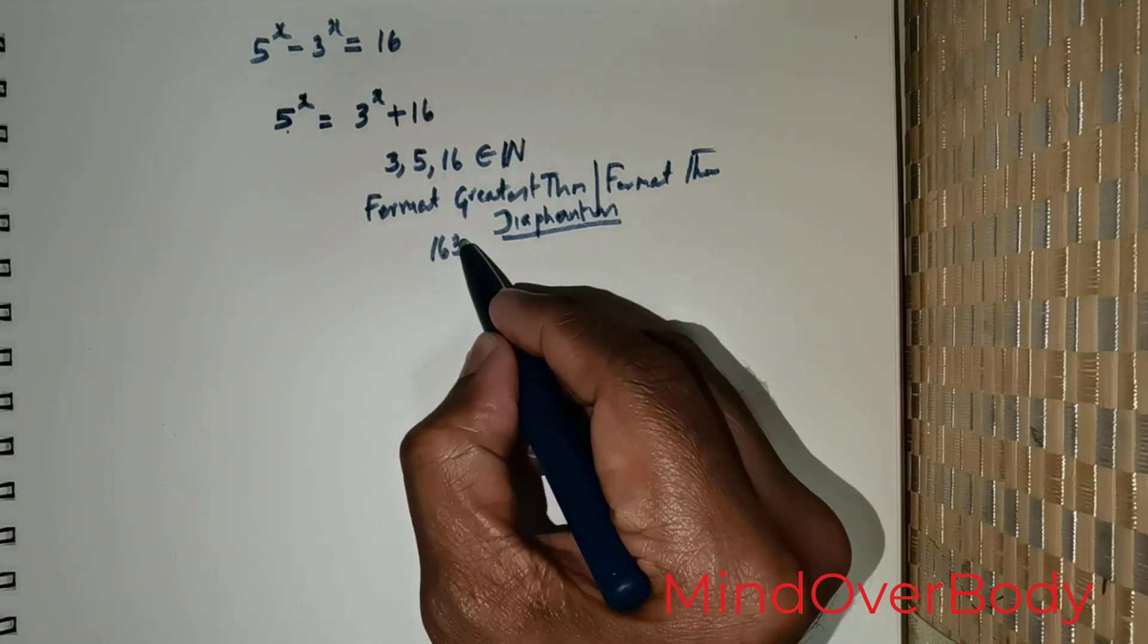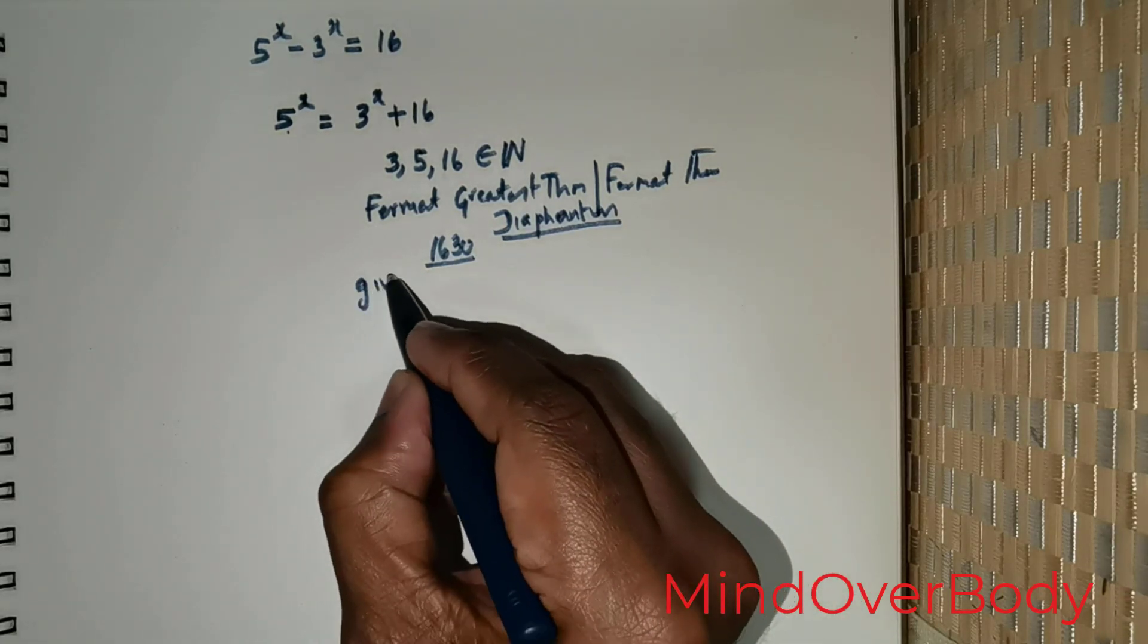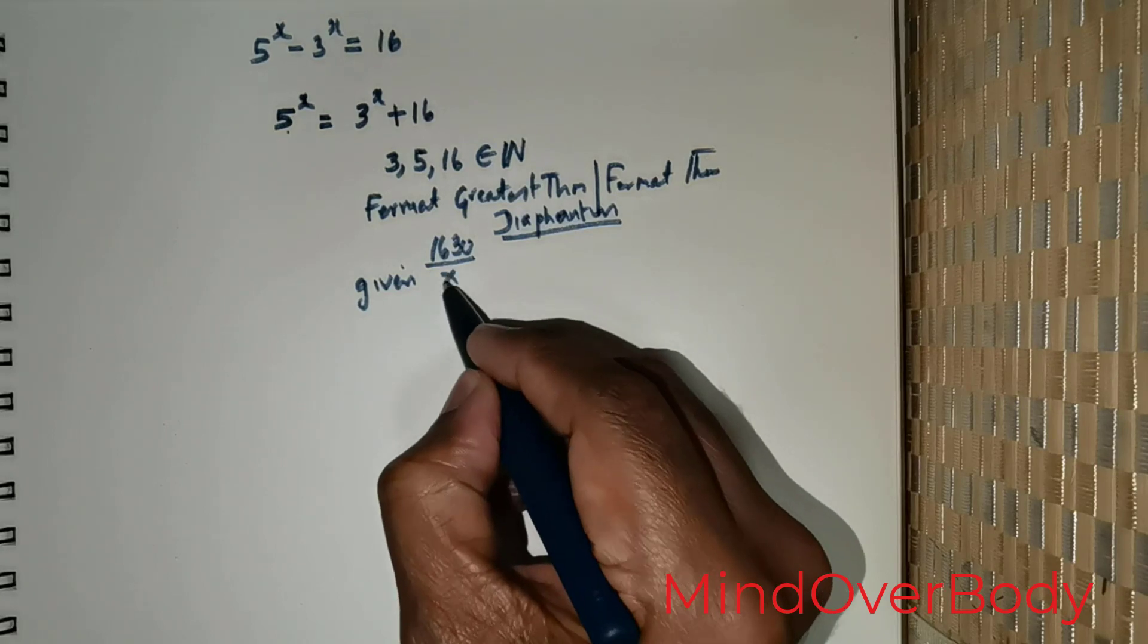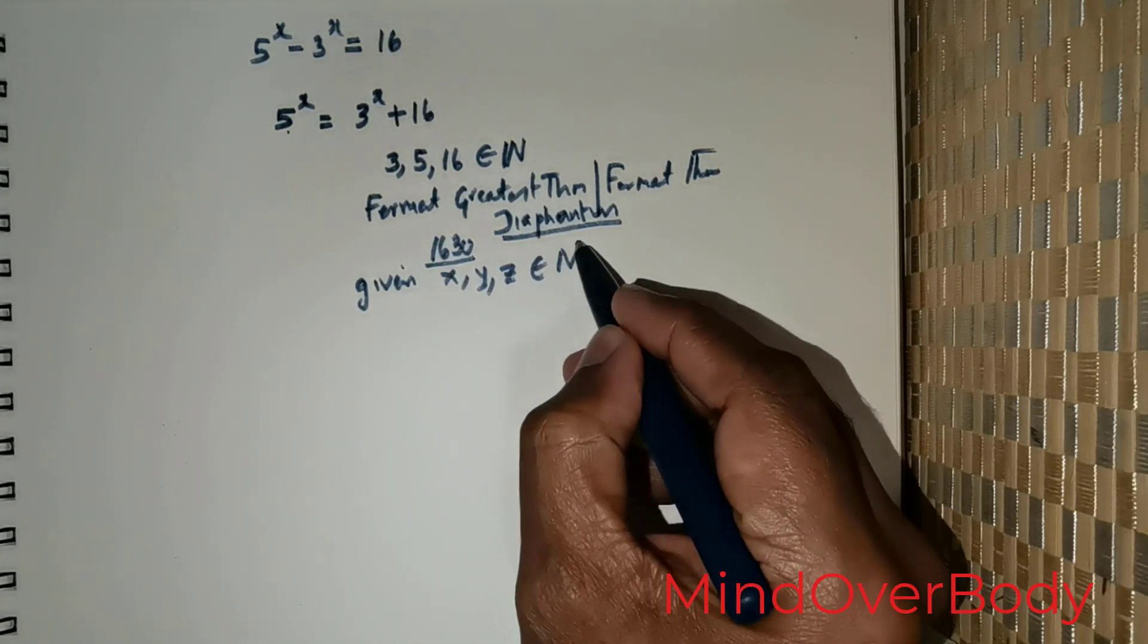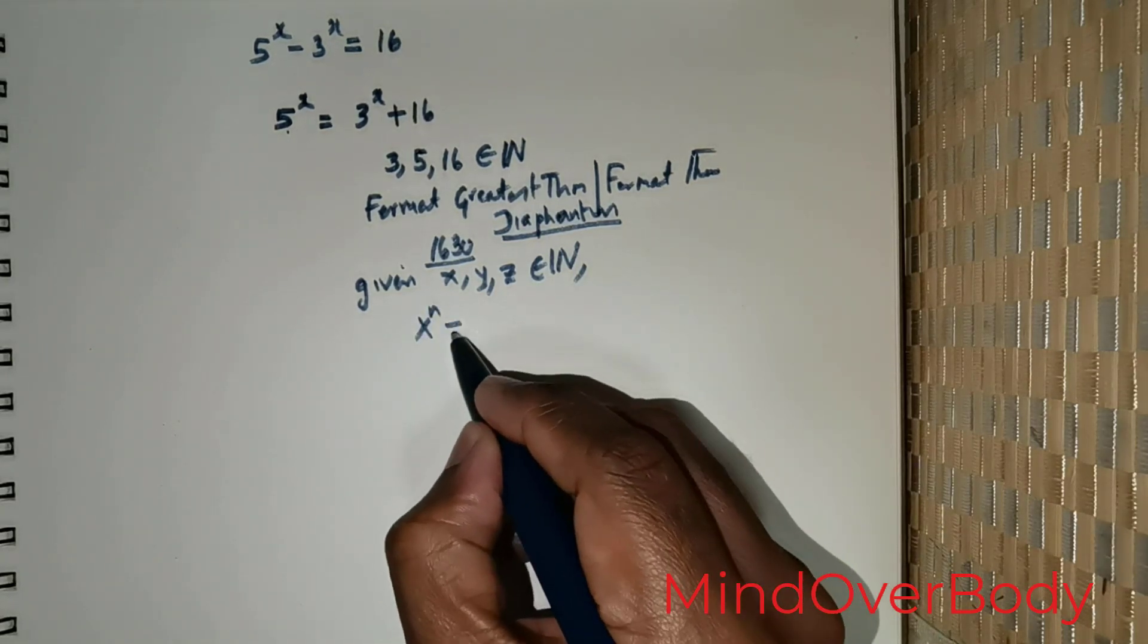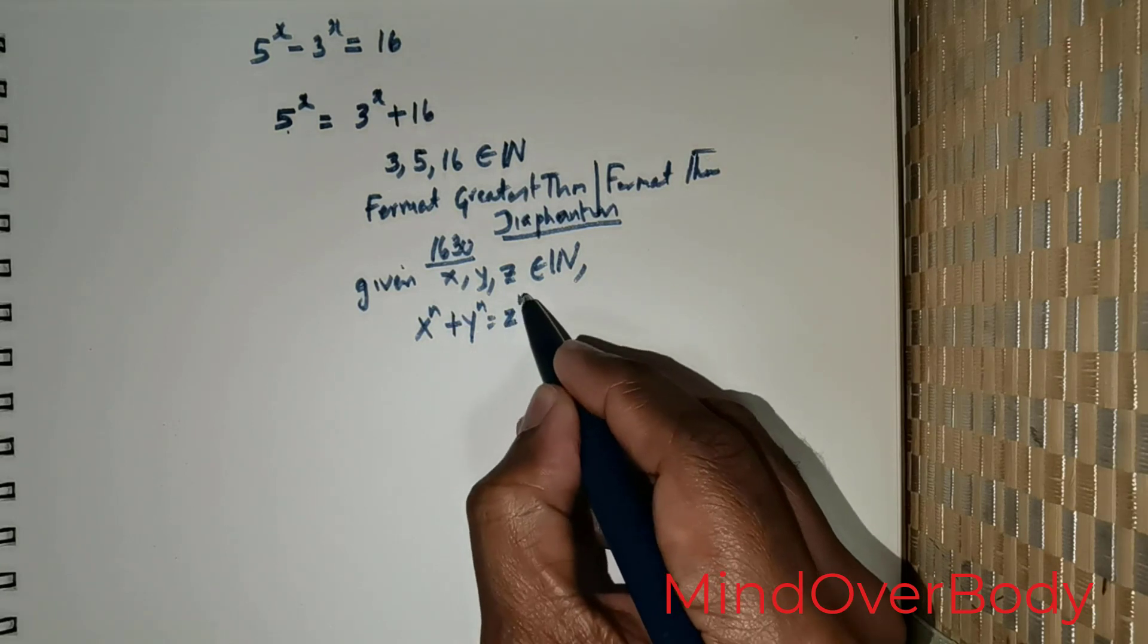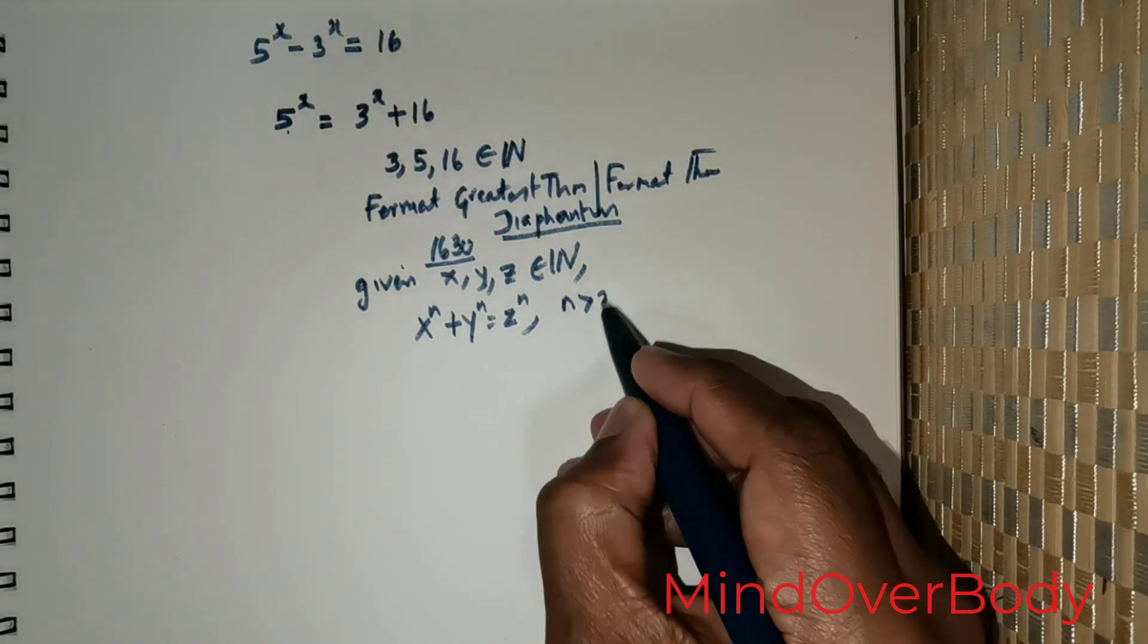According to Fermat's theorem, given x, y, z ∈ ℕ (element of natural numbers), x^n + y^n = z^n for n strictly greater than 2 will not have any integral solutions.